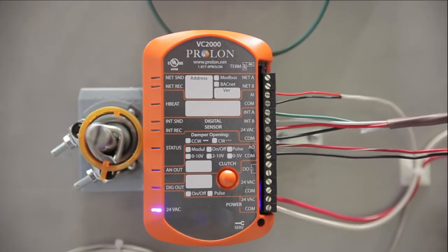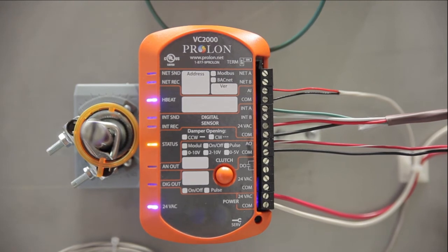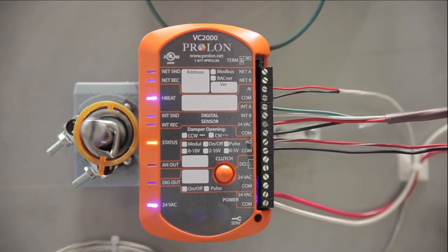Upon initial power up, various pilot lights on the VC2000 illuminate to confirm different functions of the controller.